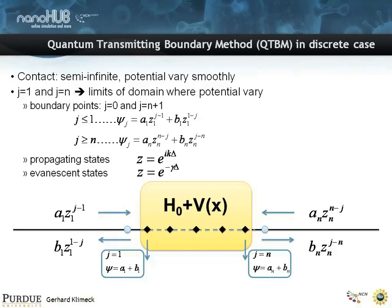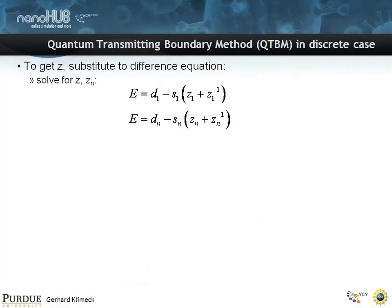So you have these propagating states Z, and you have a scattering matrix in between. You have the A's that are incoming, and the B's that are outgoing, and you have a scattering matrix. You could solve that scattering matrix analytically, it's not that hard.